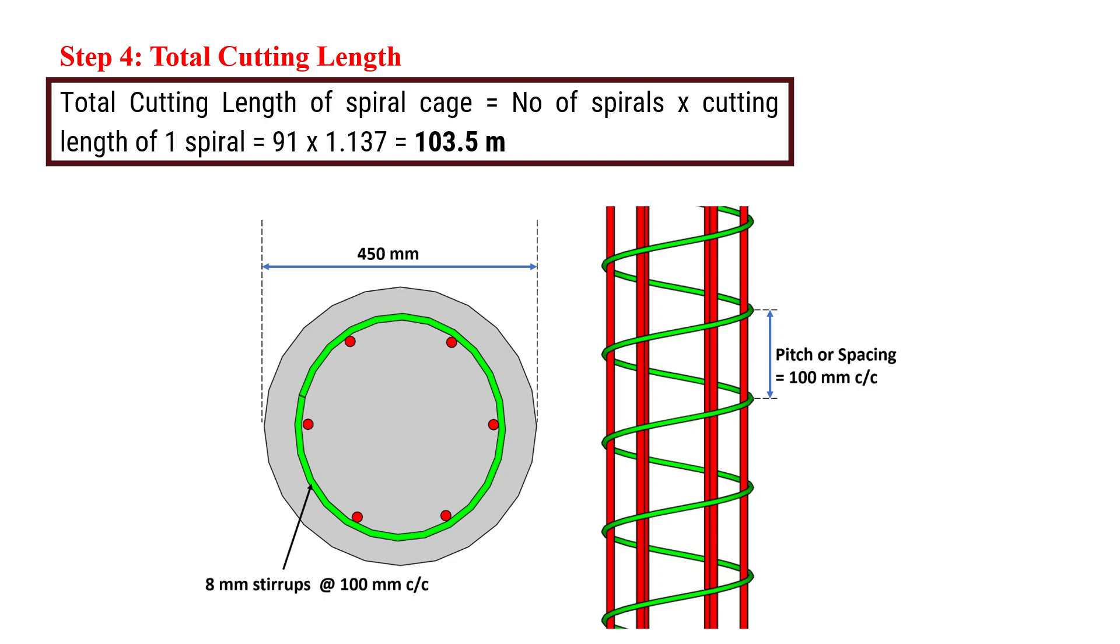And there you have it, the total cutting length of the spiral cage for our column will be 103.5 meters. So, this was all about this lecture. Thank you.